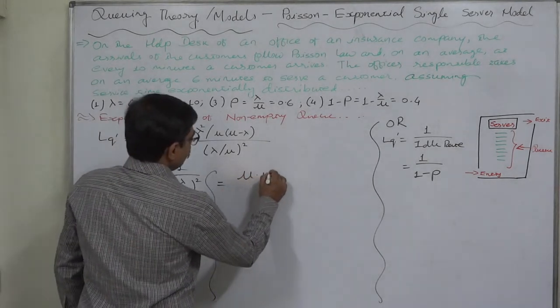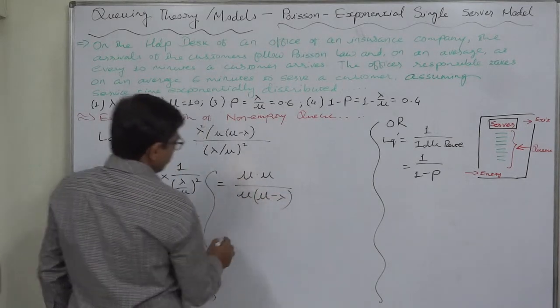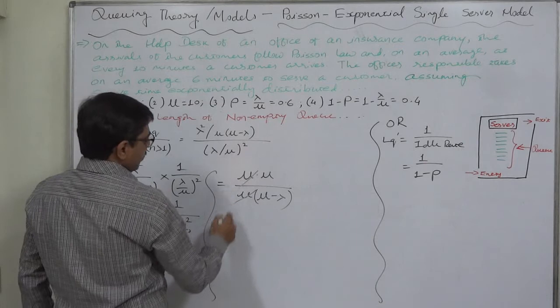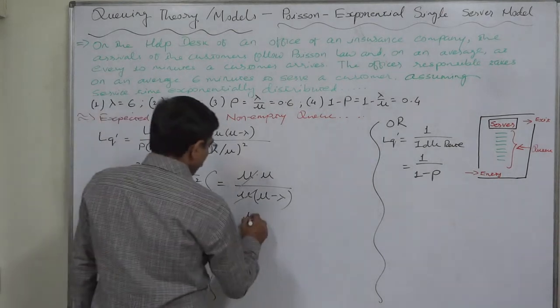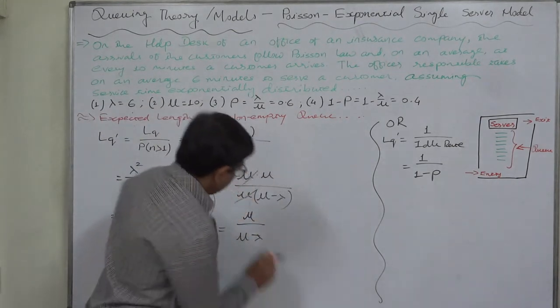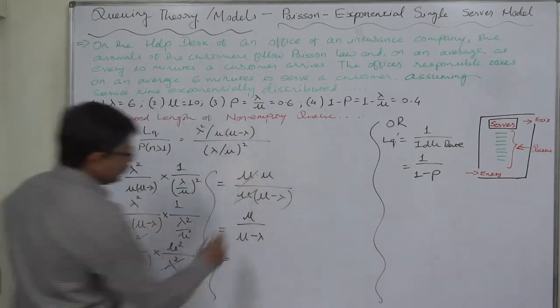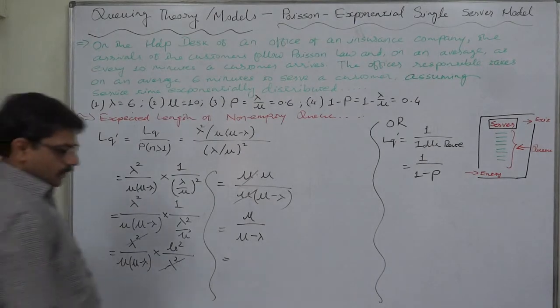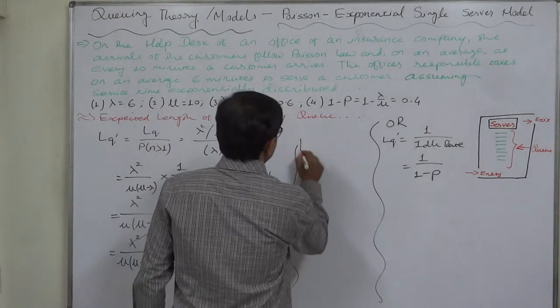So we can cancel now 1 mu from numerator as well as denominator, so the formula comes to mu upon mu minus lambda. First time ever mu comes as a numerator. Now this is the formula, let us use it.